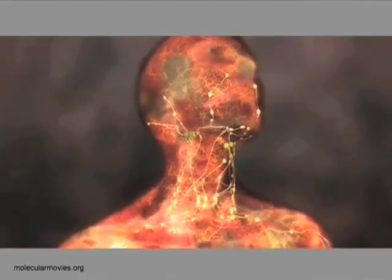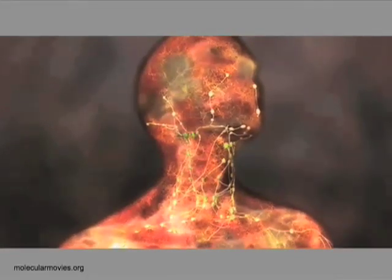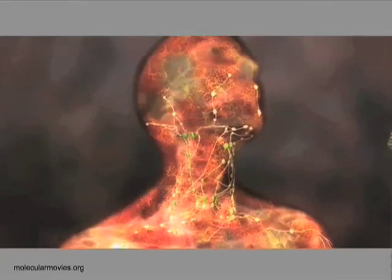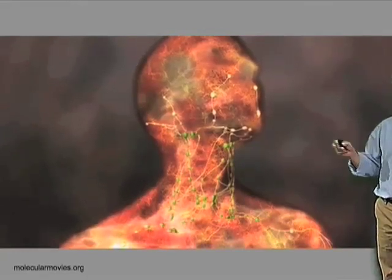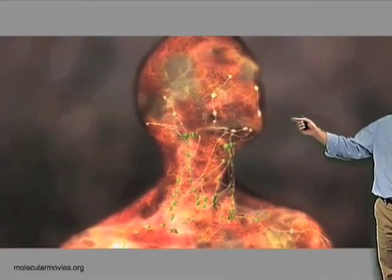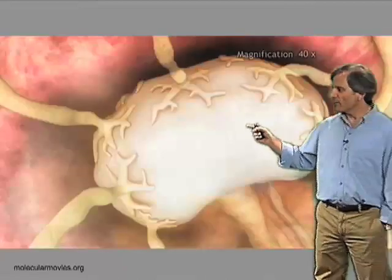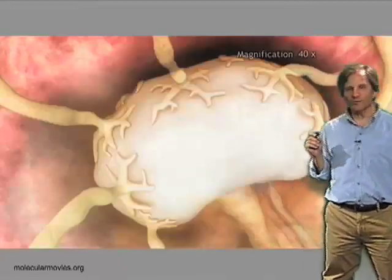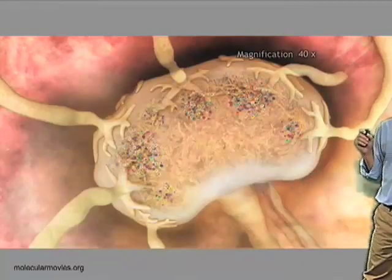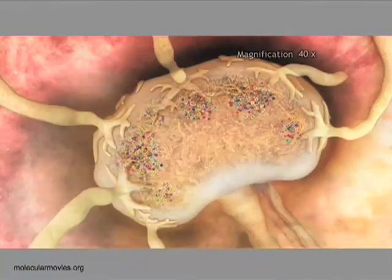What happens to these antigens is that they begin to drain into the intercellular spaces found in all of your tissues — referred to as the lymph. The lymph drains into the lymphatics, which then comes into these nodes, or specifically lymph nodes.